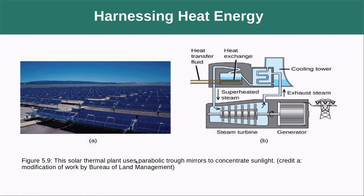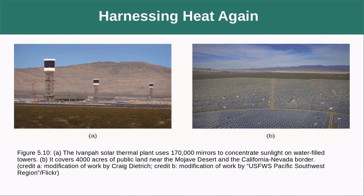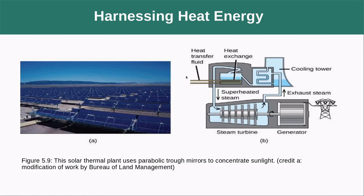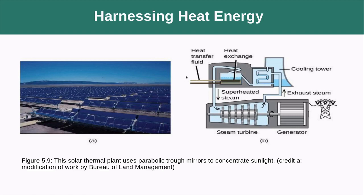An example of harnessing heat energy: in some solar plants, a large array of mirrors in the desert focuses sunlight on a single point to heat water to boiling. The steam produced is forced through a turbine to generate electricity. It's like a giant magnifying glass — similar to what you might have used as a kid to focus sunlight and set a leaf on fire.